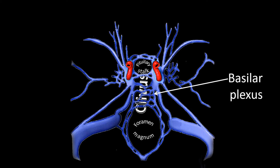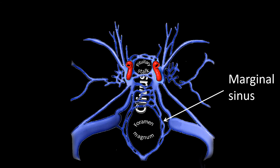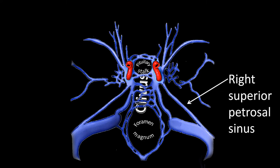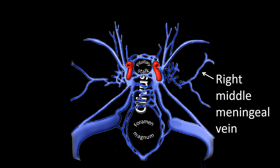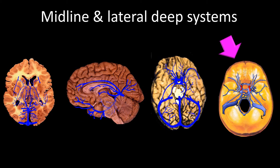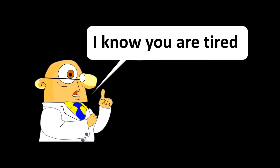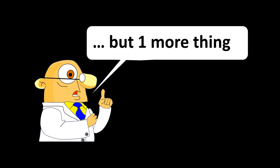Please make sure that you identify the basilar plexus, which communicates with the marginal sinus around the foramen magnum, and the superior and inferior petrosal sinuses. Laterally, the cavernous sinus communicates with the pterygoid plexus, from where the middle meningeal vein originates. So now we have looked at all the intended views.